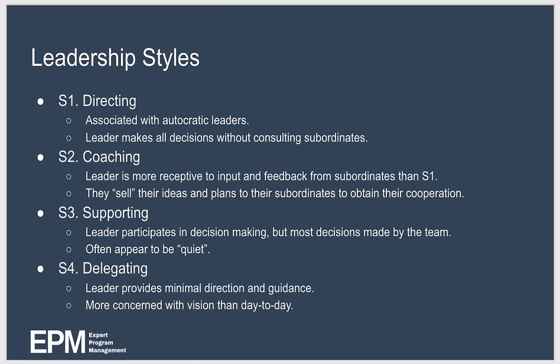The model proposes four primary leadership styles. The first is S1, a directing style of leadership, which is associated with autocratic leadership. A directing leader will make all the decisions without consulting subordinates. They will simply inform their team of the decision they have made and expect their team to carry out their instructions. Feedback from the team is discouraged, and the directing leader decides who, what, how, why, and when.